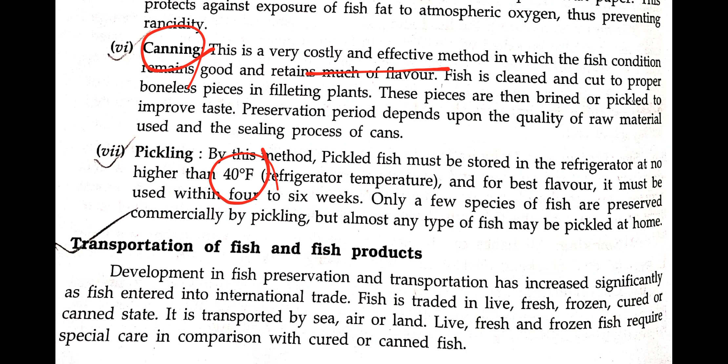Regarding transportation of fish and fish products, considerable development in fish preservation and transportation has increased significantly as fish entered into international trade. Fish is dealt with and transported in live, fresh, frozen, cured, and canned states, transported by sea, air, and land. Transportation of fresh and frozen fish requires special care compared to cured and canned fishes.